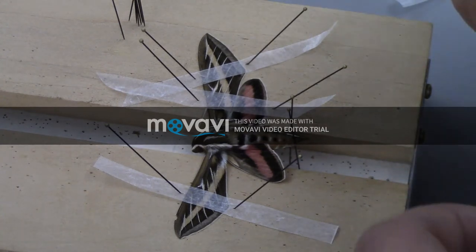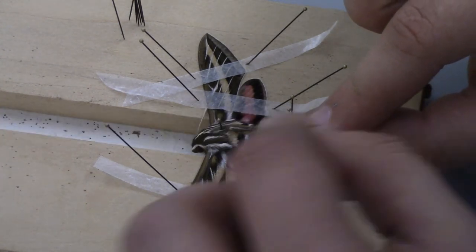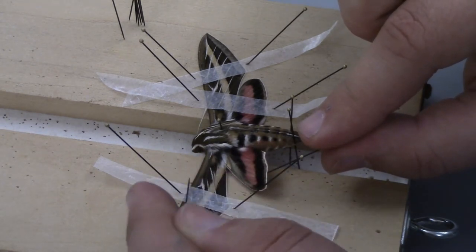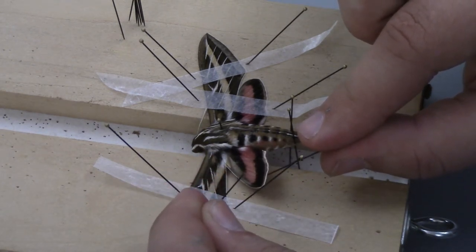Carefully use your pins to move the bottom wing up to the top wing. You don't want to pin through the wing. You're using your pins to slide it across.